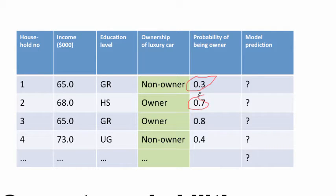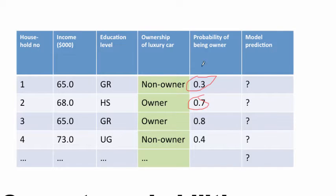You have the raw probabilities and then from the raw probabilities, the models can make a prediction. For example, this looks like a very low probability of being an owner, so this person should be classified as a non-owner. The second person has a probability of 0.7, so that person is probably likely to be an owner. The question is: how do we go from probabilities to an actual classification?